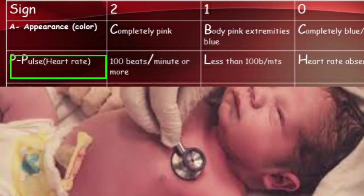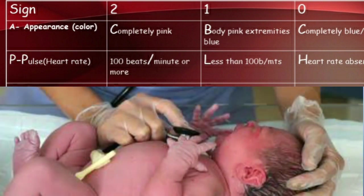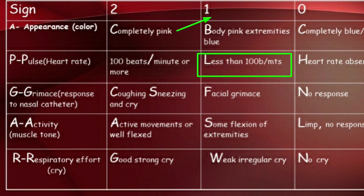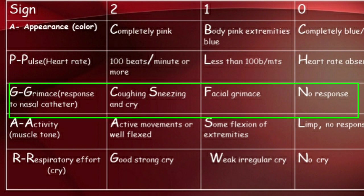The second parameter is Pulse rate or heart rate. If the heart rate is 100 beats per minute or more, it indicates a score of 2. If the heart rate is less than 100 beats per minute, the score is 1. If the heart rate is absent, the score is 0.